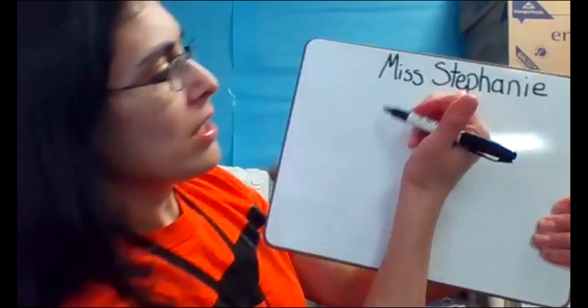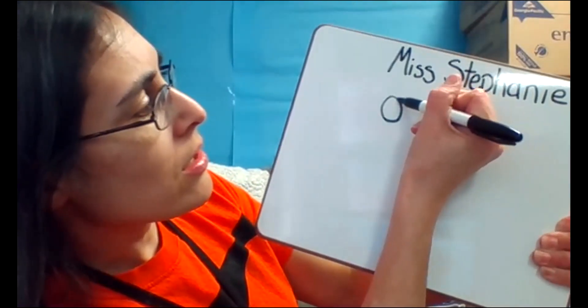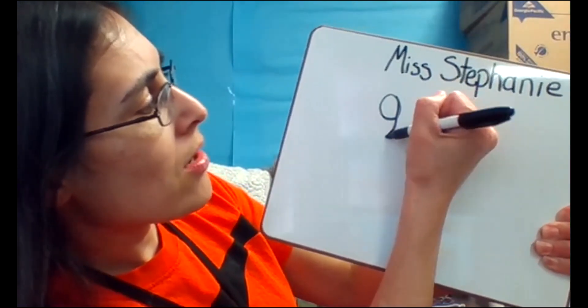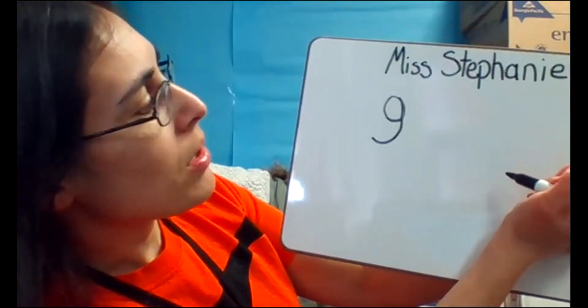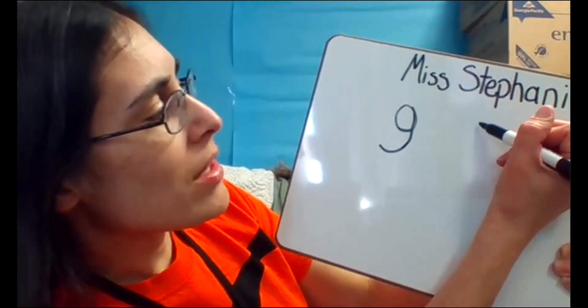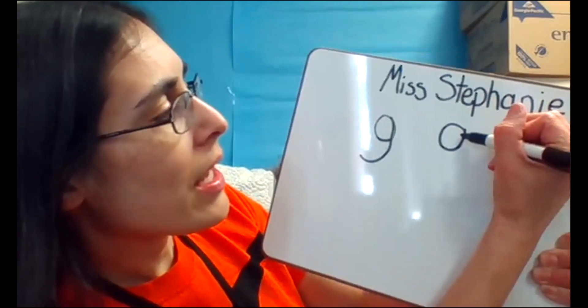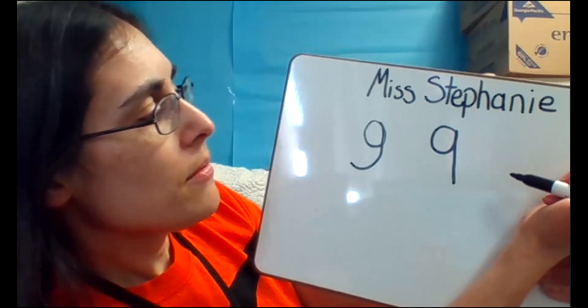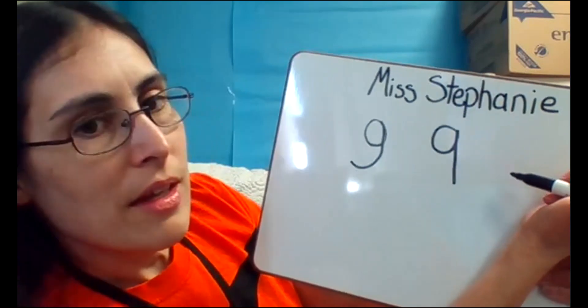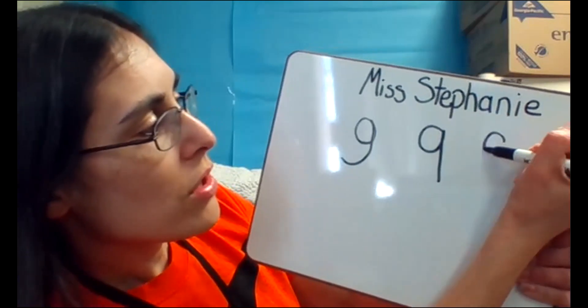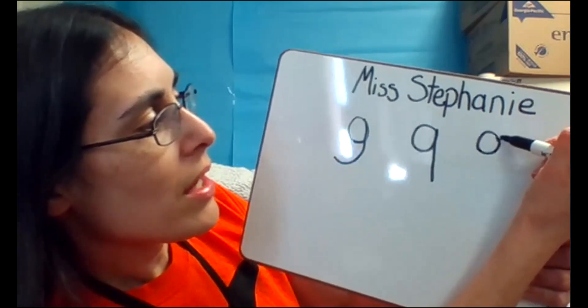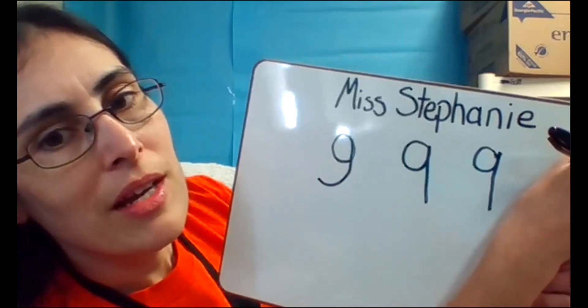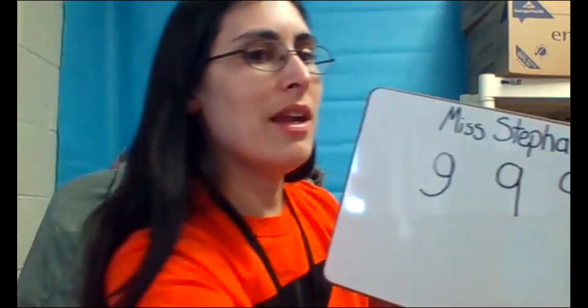Let's practice writing the number nine. There was a nine that looked like this — it had a circle but then it came down and around. You can also write the nine with a circle and a line down. Number nine — a circle and then a line down next to it.